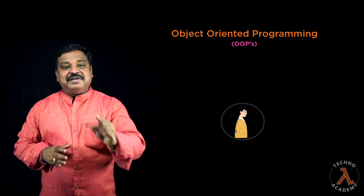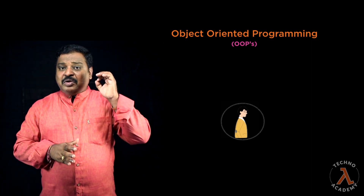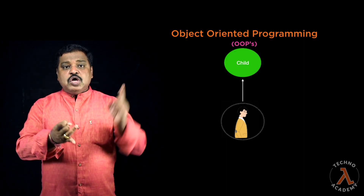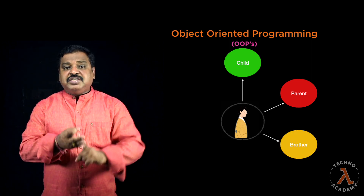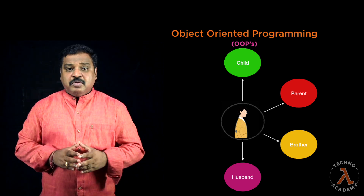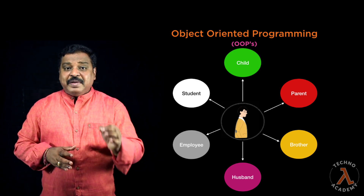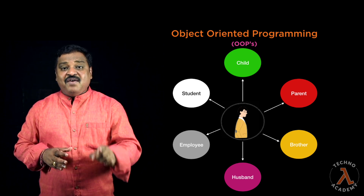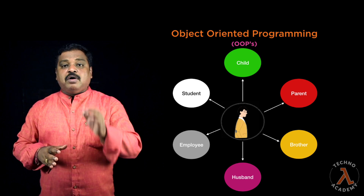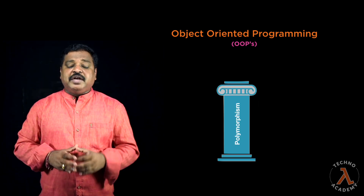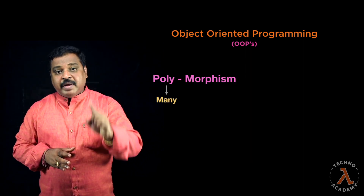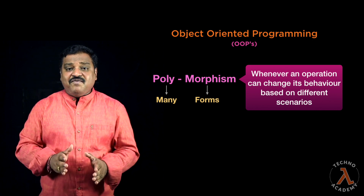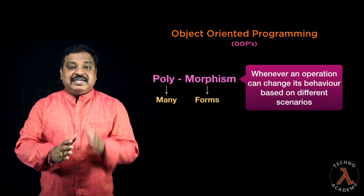Finally, consider that you as a person have different characteristics and behaviors in different situations. You might be a child for a parent, a parent for other children, a brother or sister for someone, a husband or wife for another, an employee, or a student. Depending on the different persons you interact with in different situations, your characteristics and behaviors change. This is technically called polymorphism, the fourth pillar of object-oriented programming, where 'poly' means many and 'morphism' means forms. Whenever an operation changes its behavior based on different scenarios, we call it polymorphism.